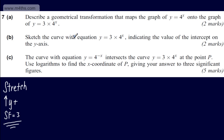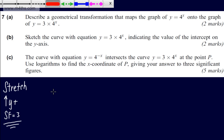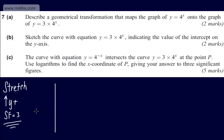In part B, we're asked to sketch the curve with the equation y equals 3 times 4 to the x, indicating the value of the intercept on the y axis. The question carries two marks. So we're going to have an exponential graph.